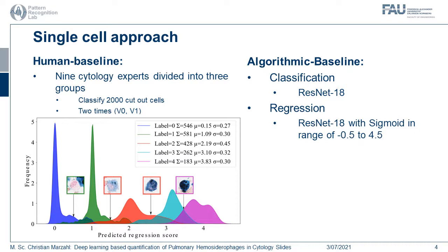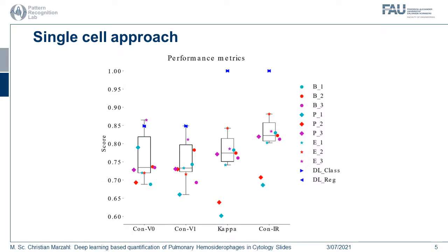We can see here some results. We have our grade labels and the number of cells belonging to those grades, and the continuous grade predictions — for example, a cell which belongs to grade 1.5 showing features from grade 0 and grade 1. The scores range between 0.7 and 0.87, with our deep learning model in the top half of the results. Also, we see the reproducibility is almost perfect, as expected for deep learning or machine learning processes, while our experts have a hard time reproducing their results.